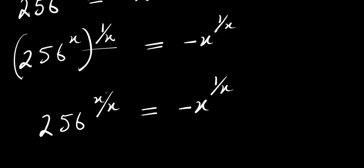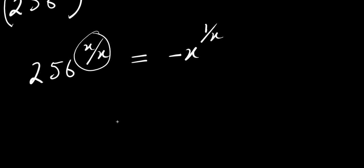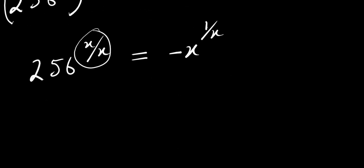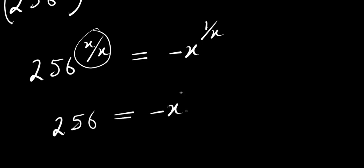From here, x over x is 1, so that will cancel out. That means I'm simply going to have 256 equals negative x power 1 over x.